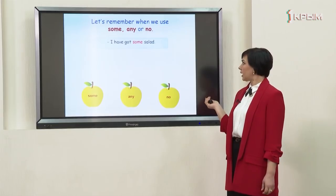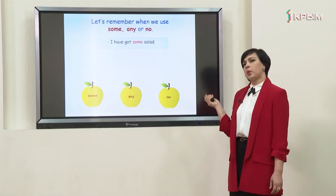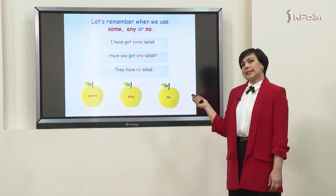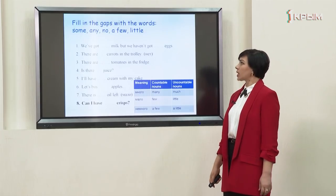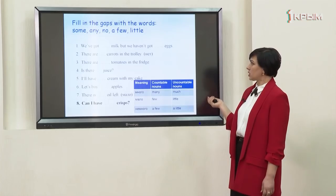Let's remember when we use some, any, or no. 'I've got some salad' — some we use in positive sentences. 'Have you got any salad?' — any we use in interrogative sentences. 'They have no salad' — no we use in negative sentences. Now it's time to practice. Your task is to fill in the gaps with the words some, any, no, a few, or little, keeping the rule in mind.